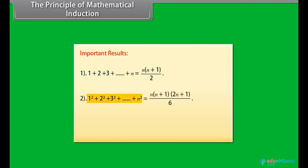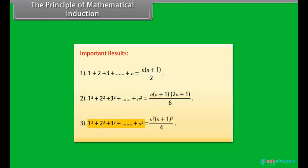1² + 2² + 3² + ... + n² = n(n+1)(2n+1)/6. 1³ + 2³ + 3³ + ... + n³ = n²(n+1)²/4.